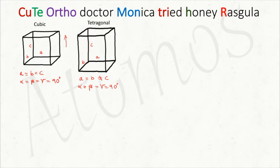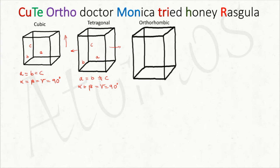Now pull the tetragonal system from the sides as well. Then a also changes. So all three edges become different: a ≠ b ≠ c. But is there any change in the angles? No — alpha = beta = gamma = 90°. This is the orthorhombic system.